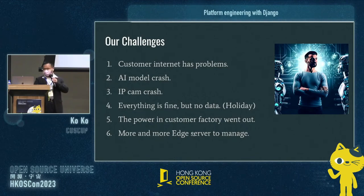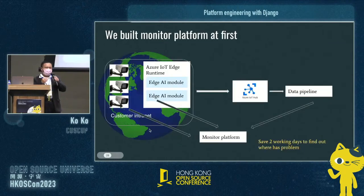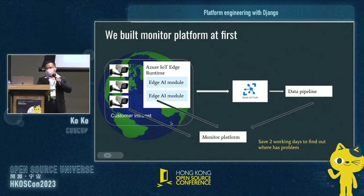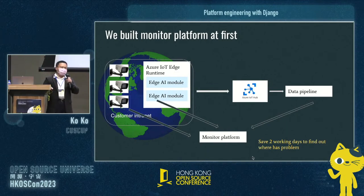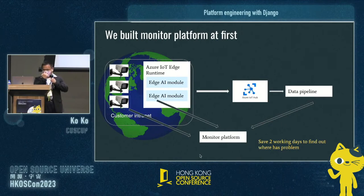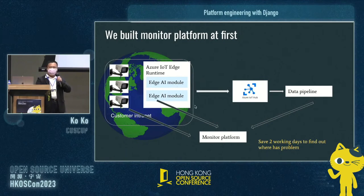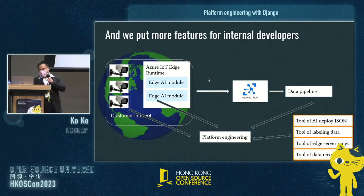What we did first was build a monitoring platform to monitor IP cameras, Azure edge servers, and our data pipeline. After finishing this monitoring platform, we saved two working days — before, we might spend two days just figuring out which part had a problem. After the monitoring platform, we could identify issues immediately. This was amazing. We then wanted to add more features to this monitoring platform, so it became an internal developer platform — that is platform engineering.